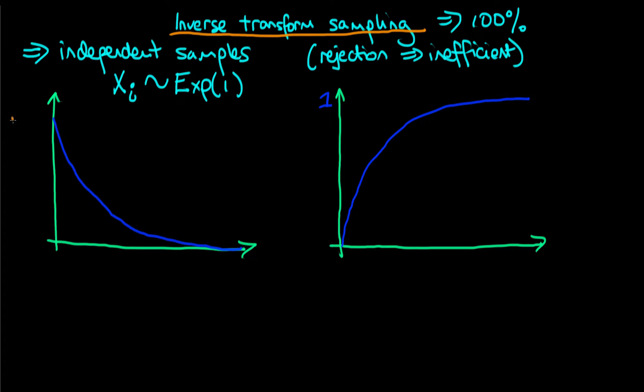On the left hand side here I've drawn the PDF for our exponential random variable, a sort of downward sloping line. On the right what I've drawn here is something which is known as the CDF. The CDF stands for the cumulative distribution function.